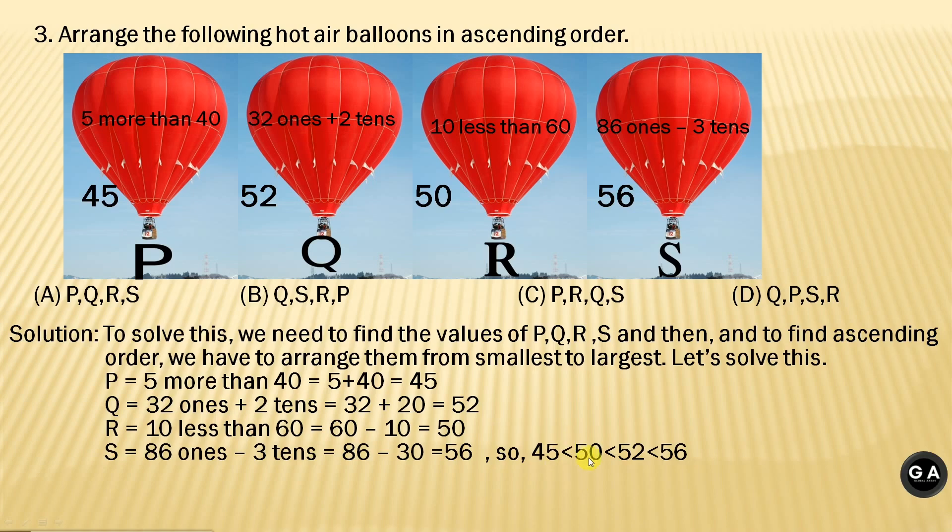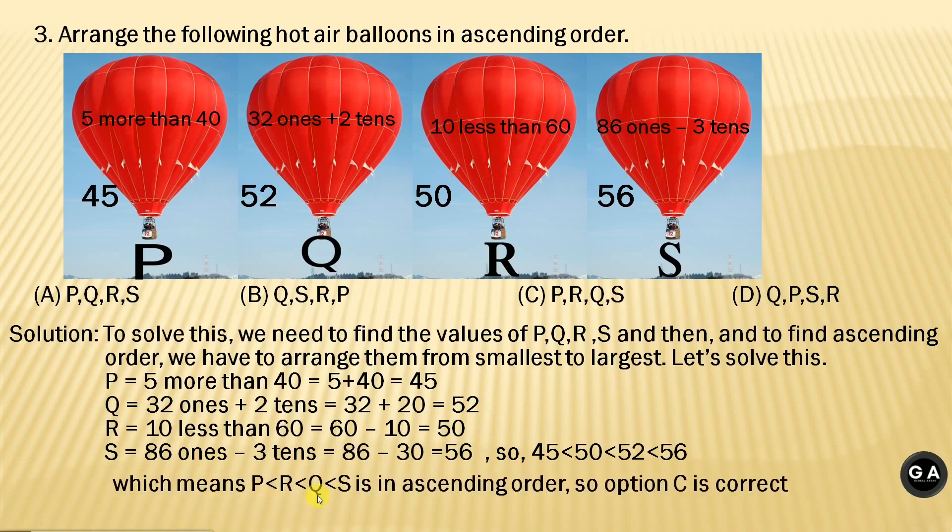So, 45 is less than 50, 50 is less than 52, and 52 is less than 56. Which means P, R, Q, S is in ascending order. So, option C is correct.